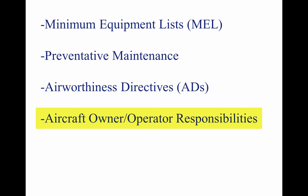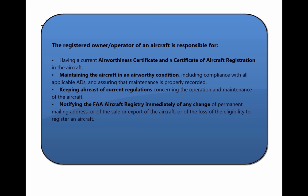The registered owner or operator of an aircraft is responsible for having a current airworthiness certificate and certificate of aircraft registration in the aircraft, maintaining the aircraft in an airworthy condition including compliance with all applicable ADs, assuring that maintenance is properly recorded, keeping abreast of current regulations concerning operation and maintenance of the aircraft, and notifying the FAA Aircraft Registry immediately of any change of permanent mailing address, sale or export of the aircraft, or loss of eligibility to register an aircraft.